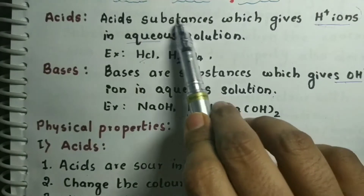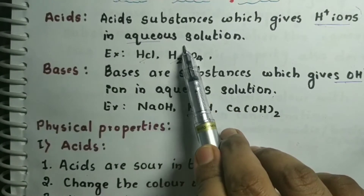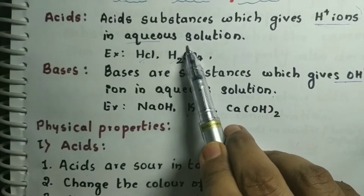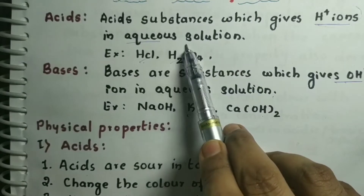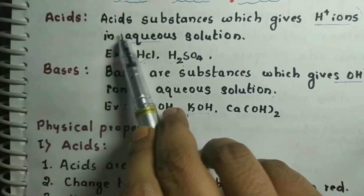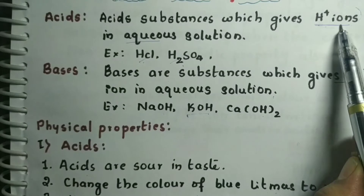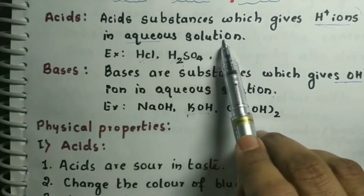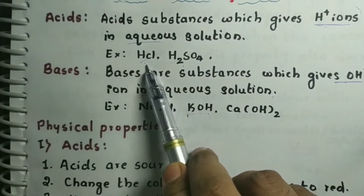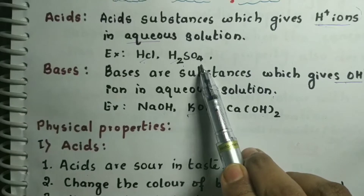Acids are substances which give H+ ions in aqueous solution. Aqueous solutions are solutions in which the solvent is water. So acids are the substances which give H+ ions in aqueous solution. Some examples of acids are hydrochloric acid and sulfuric acid.